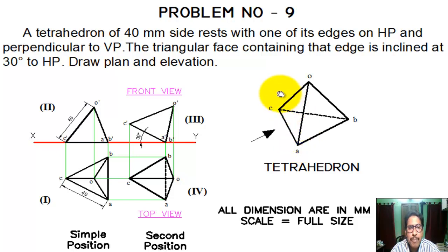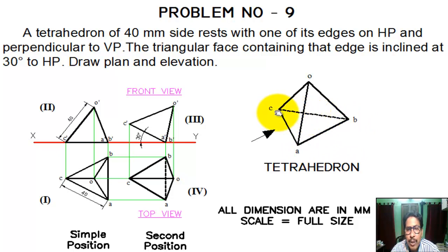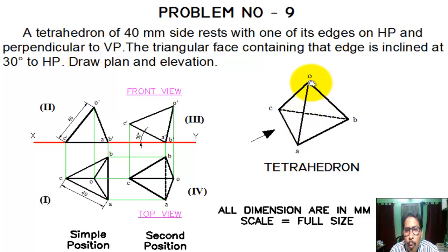In our problem, the tetrahedron has 40mm sides: AB equal to BC equal to CA equal to 40mm. And also OA, OB, OC are also 40mm.